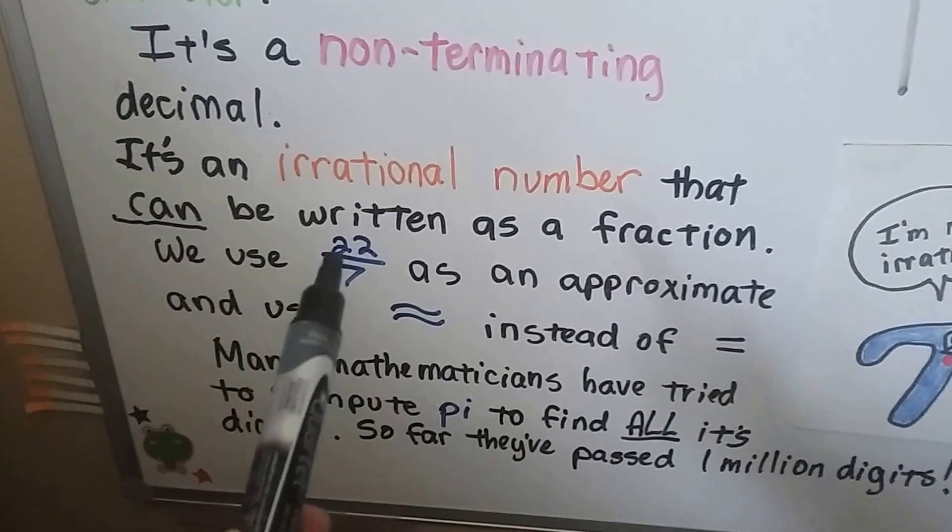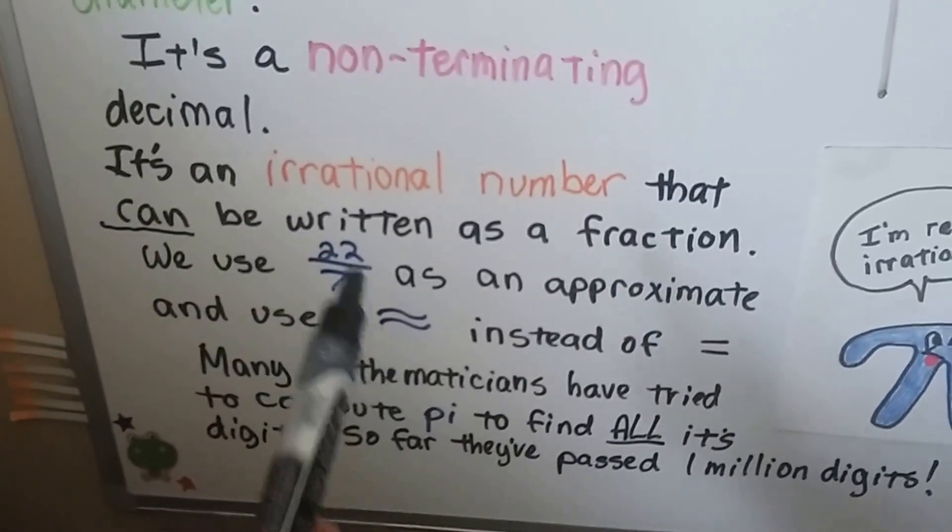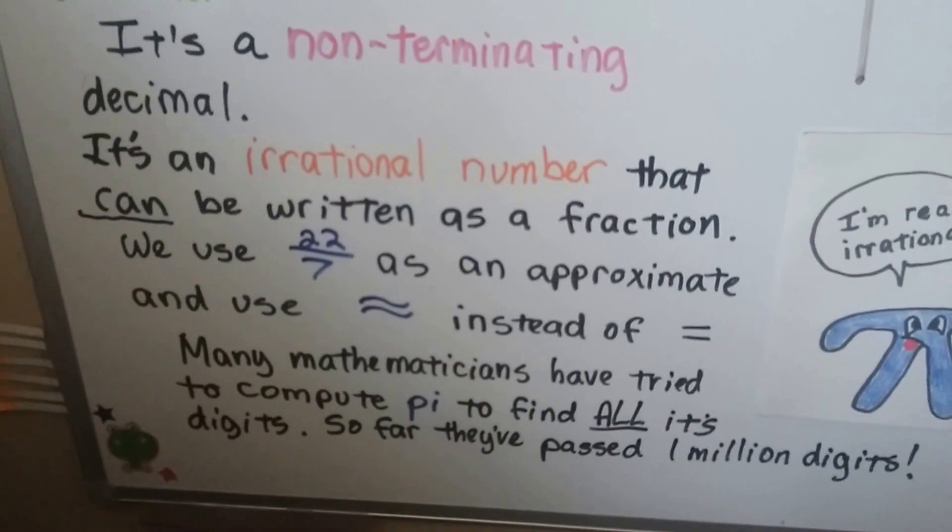So it's really not 22 sevenths. It's just approximately 22 sevenths. So we can use that.